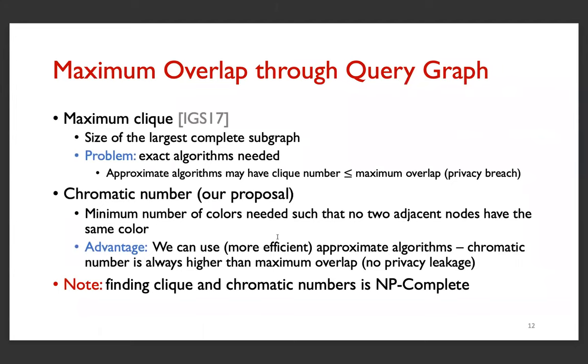Which problems could then be related to maximum overlap? One of them is maximum clique, which is defined as the size of the largest complete subgraph. The problem is, in this case, we need to use an exact algorithm, because any approximate algorithm may underestimate the clique number, which could in turn be less than the maximum overlap, which could be a privacy breach.